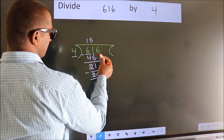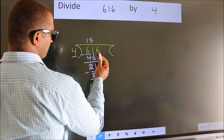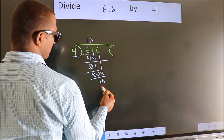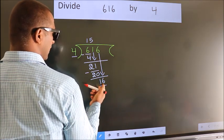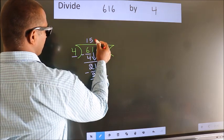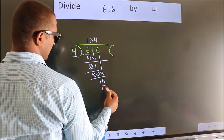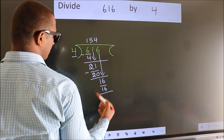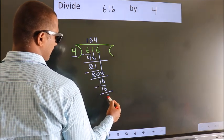After this, bring down the beside number. So 6 down. So 16. When do we get 16 in 4 table? 4 4s 16. Now we subtract. We get 0.